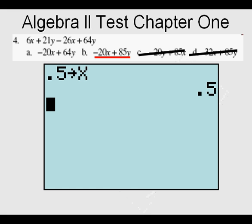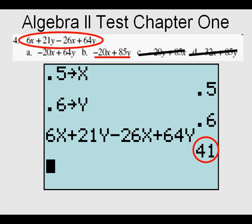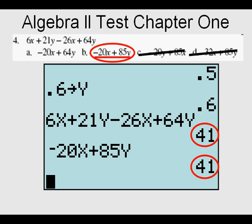We'll check this with the graphing calculator. We check for expression equivalency by storing numbers for x and y. Store 0.5 for x by entering 0.5, then the storage key above the on key, then the x key between the alpha and stat keys, then press enter. Store 0.6 for y by pressing 0.6, then the storage key, then y by pressing alpha, then the one key with the green y above it, then press enter. Now enter the original expression, 6x plus 21y minus 26x plus 64y, and press enter. We get a value of 41. Now enter the expression we want to test, negative 20x plus 85y. That value is also 41, so that proves we've got the correct answer.